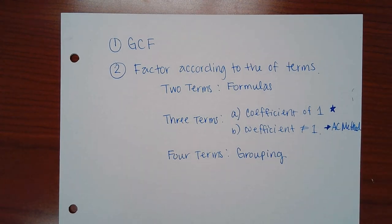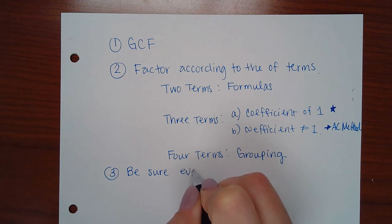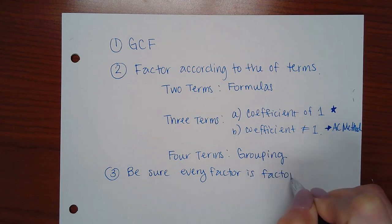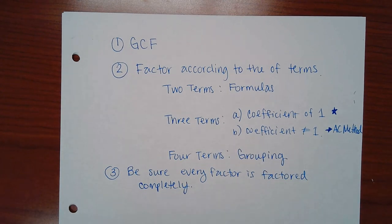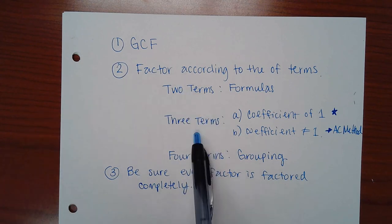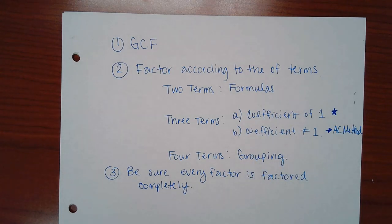The third step is to be sure every factor is factored completely. Just because you factored something out doesn't mean what remains cannot still be factored. If what you have inside any set of parentheses still has a GCF, you must factor that out. Keep applying the techniques until everything is fully factored.